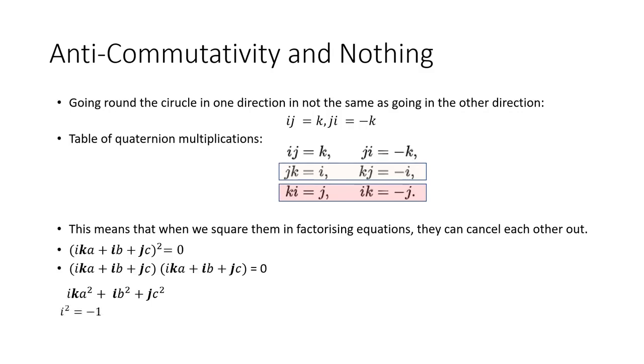So that leaves us with IKA squared plus IB squared plus JC squared. And guess what? When we start to square these numbers they also disappear. I squared is minus 1. K squared is also minus 1. Minus 1 times minus 1 is plus 1. And that means that we just have A squared. The second term IB squared. Well I squared is minus 1. So IB squared is just minus B squared. And you can probably see where this is going to go now because J squared is also minus 1. And we have minus C squared. And we have our original equation and it equals 0.